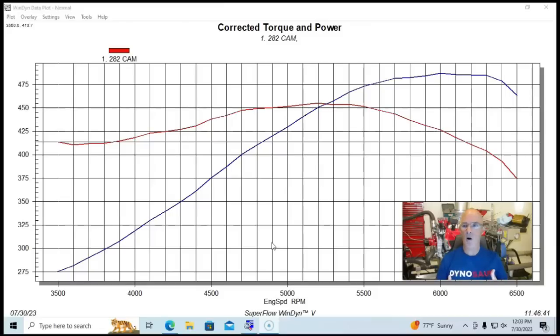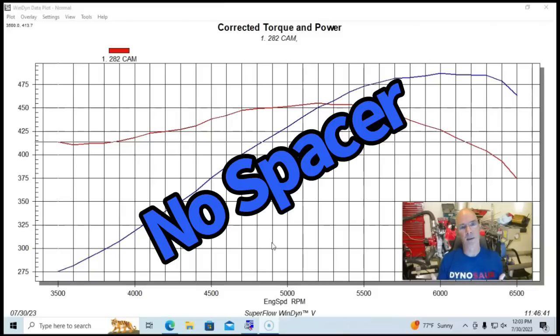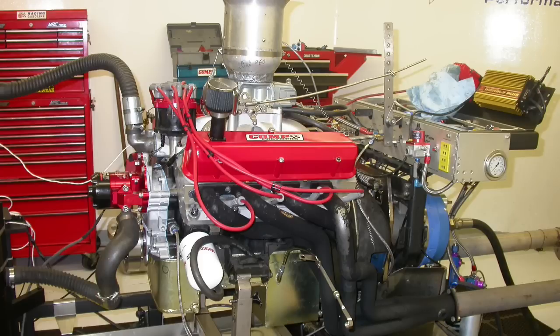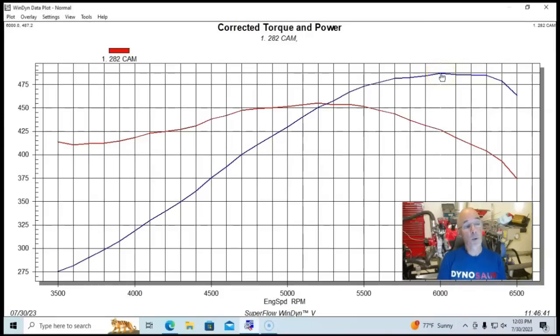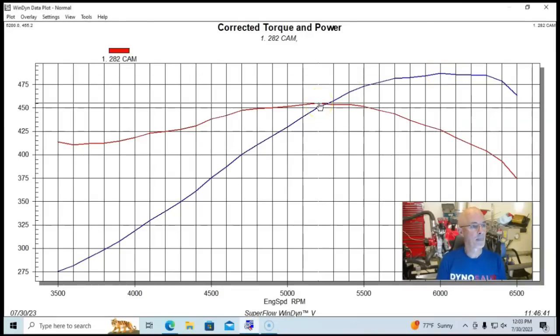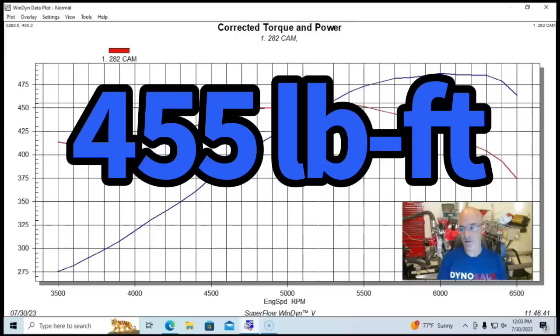So we ran that combination. And then we started out with running our 282 cam and our Edelbrock Victor Jr intake manifold. And after dialing in our carburetor and timing, this thing ran best with 35 degrees of total timing. We were rewarded with 487 horsepower and 455 foot pounds of torque.